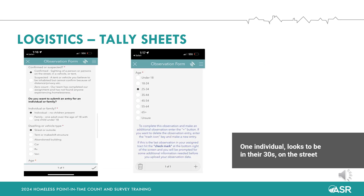Let's look at some examples on how to fill out the tally sheets. You will fill out one line per person that you see. In the first example, you observed one individual who appeared to be in their early 30s and was on the street. You start by bubbling in confirmed under confirmed or suspected. Next, you would bubble in individual, no children present, under individual or family. Under dwelling or vehicle type, you would bubble in street or outside. Under age, you would bubble in 25 to 34. To move on to the next entry, press the plus icon located under the last question near the bottom right corner of your screen.